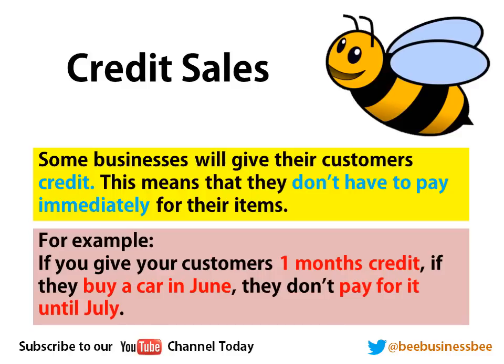You may come across something called credit sales. Some businesses won't ask their customers to pay up front in cash — they give them some time to pay, which is called credit, similar to a credit card where you might have 30 or 60 days to pay. For example, if you give customers one month's credit and they buy a car in June, they won't pay until July. As a business you have to stand out for that money, and you might want to delay paying your supplier by two months so you get paid first and can earn some interest.